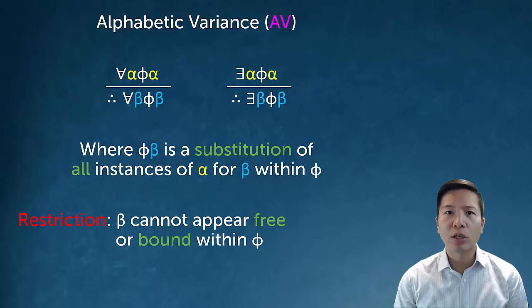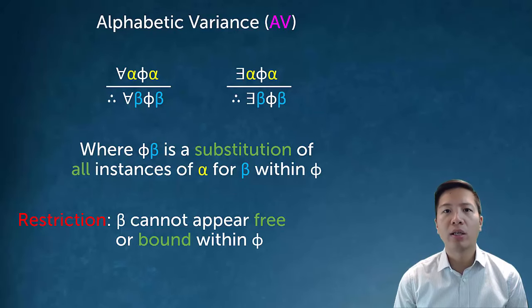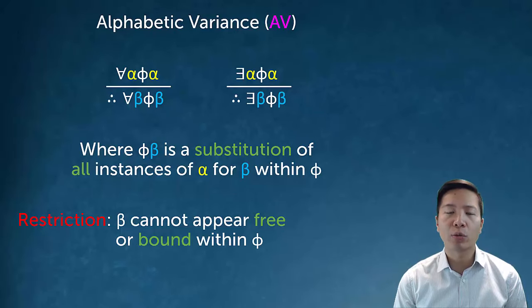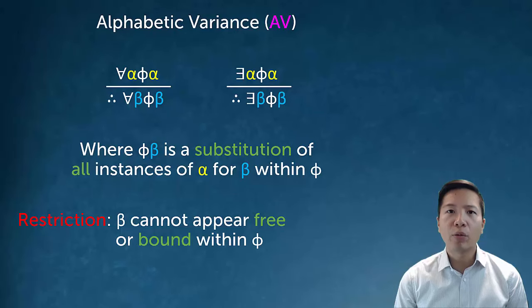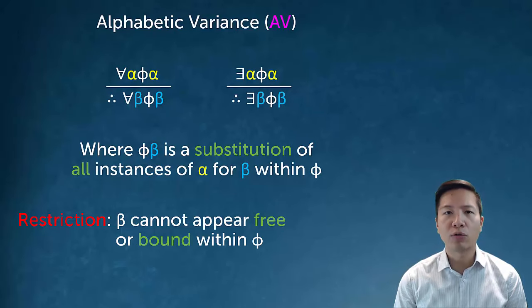So in terms of its application, one application is to clear up those sentences that we just looked at where by convention we can understand that it's not ambiguous, but we can make it explicit with alphabetic variance. Now another way that alphabetic variance is actually sort of useful is in really understanding things about universal derivations and the restrictions that go on with UD.